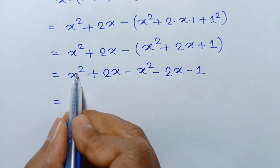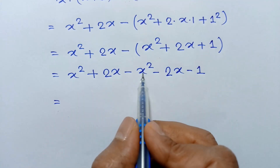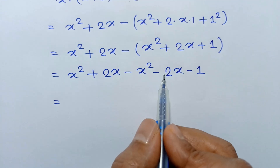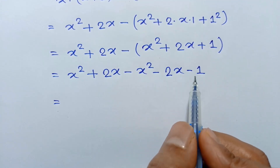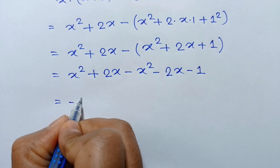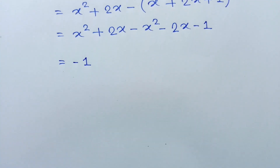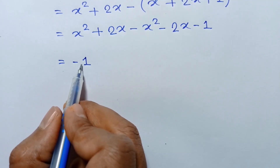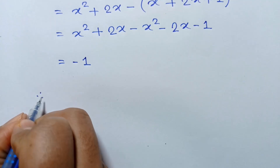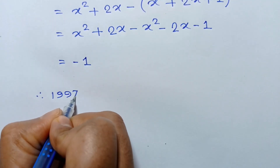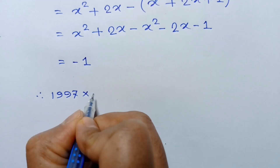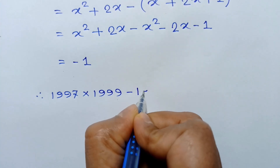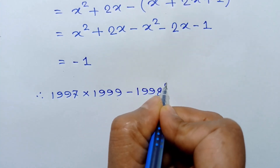The x squared and 2x terms cancel out, so this value does not depend on x at all. Therefore, 1997 times 1999 minus 1998 squared equals negative 1.